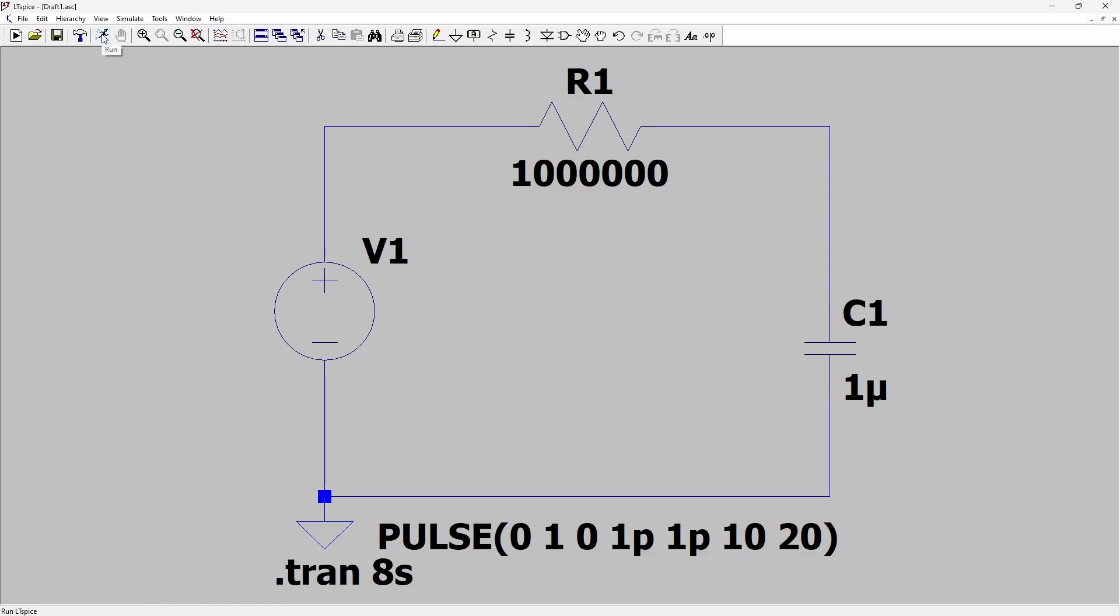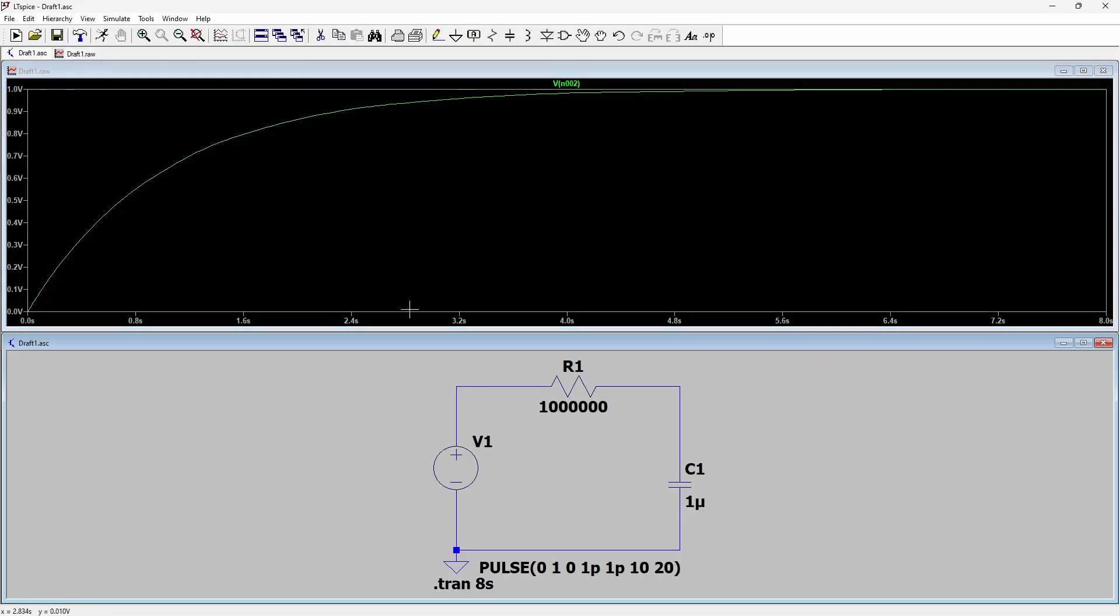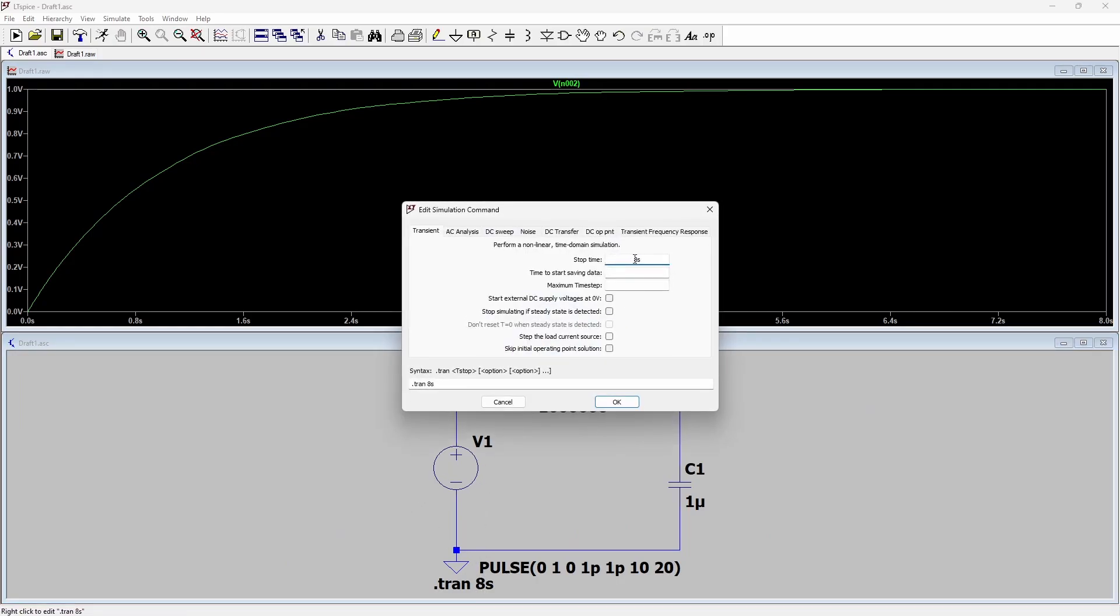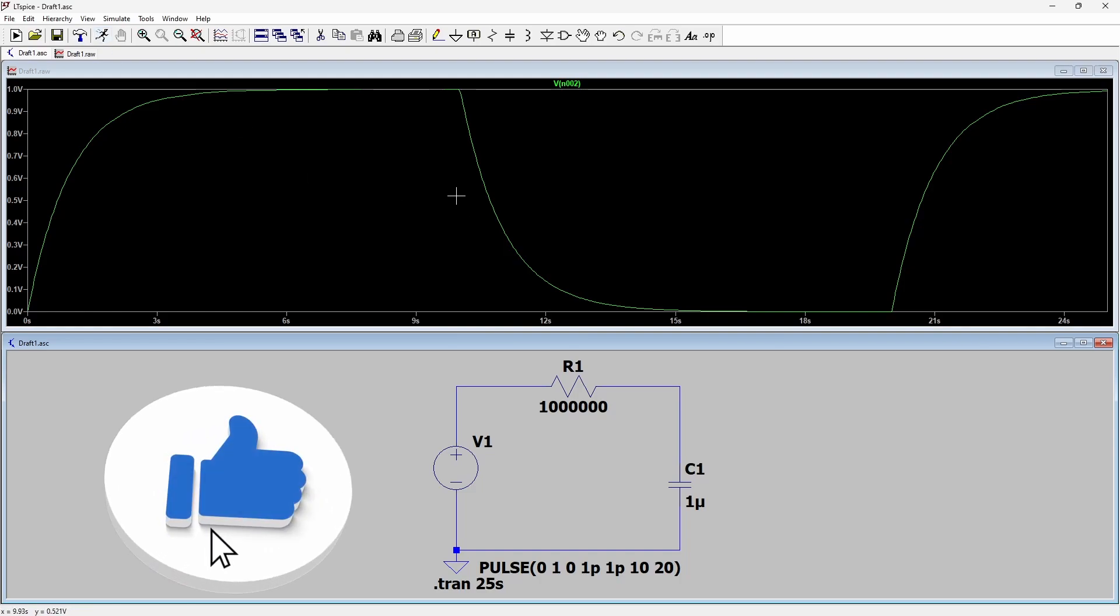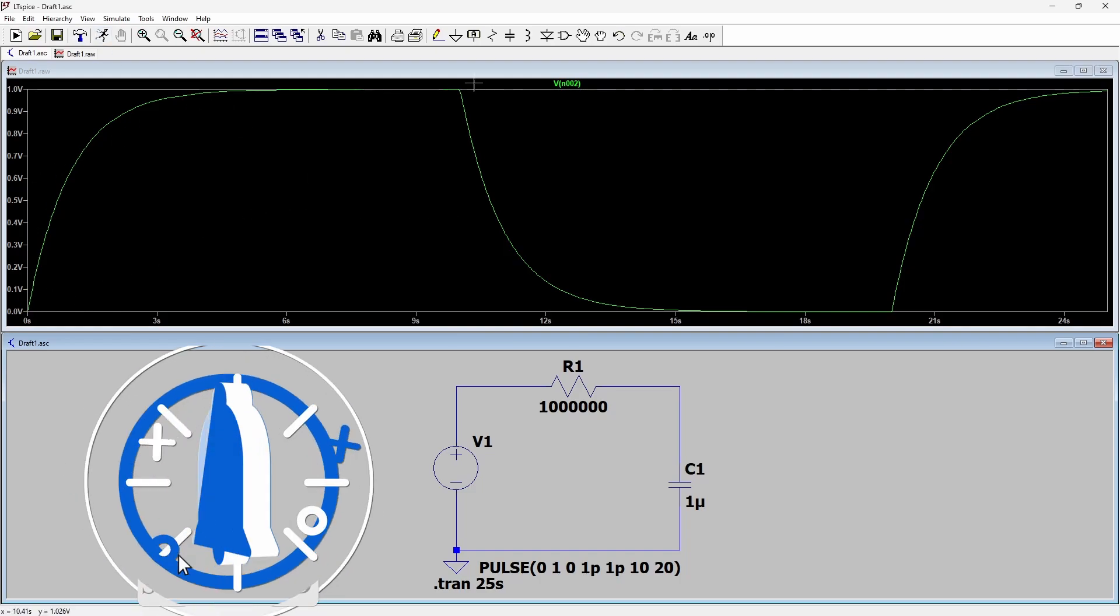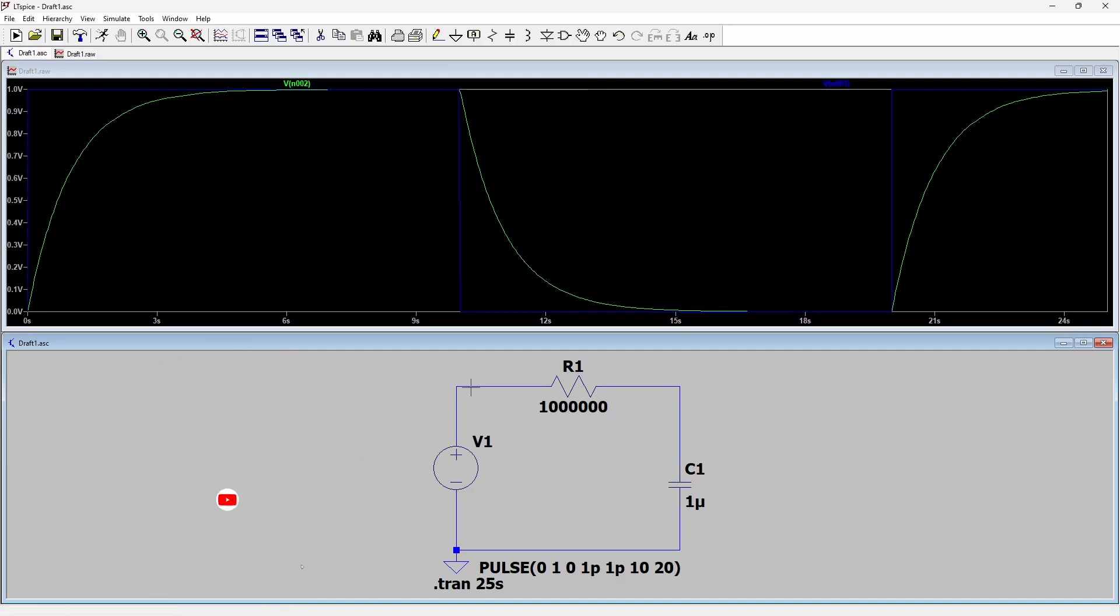So let's simulate this circuit and see what happens. You can see the simulation time is a bit short so I'm going to increase that to 25 seconds. With 25 seconds you can see we have got roughly two pulses, so we can see the input voltage on the blue line here and you can see the output voltage which is this point here on the green line.